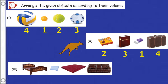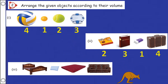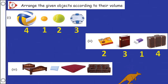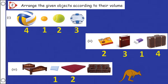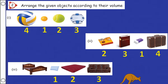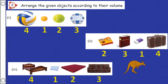Then come to the third question. Here also — one cot, pillow, bed, and sofa. These four images are here, and we have to mark them in order. First one is pillow, then bed, after that sofa, then fourth one is cot. Whatever images are given, we have to mark them in order.